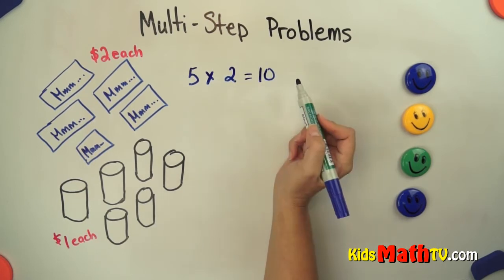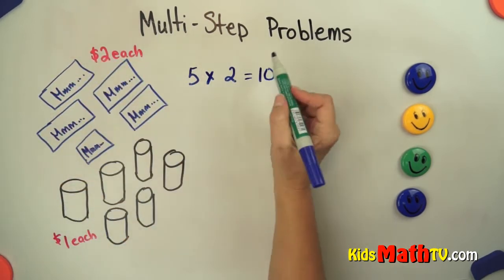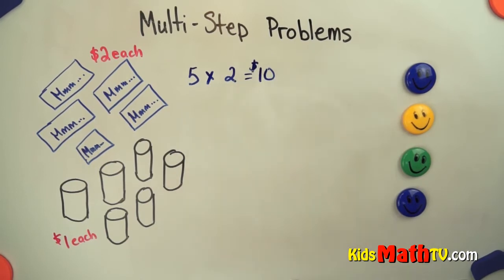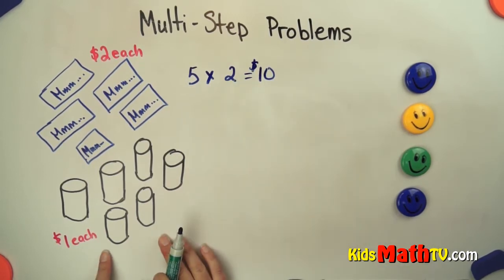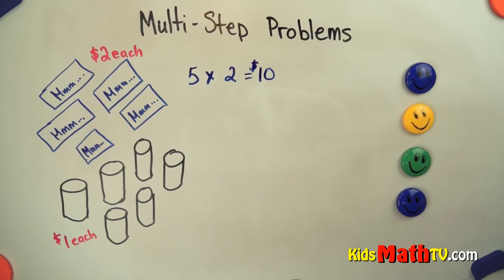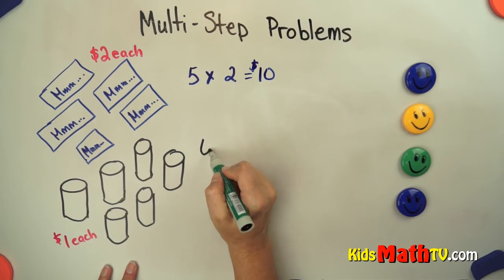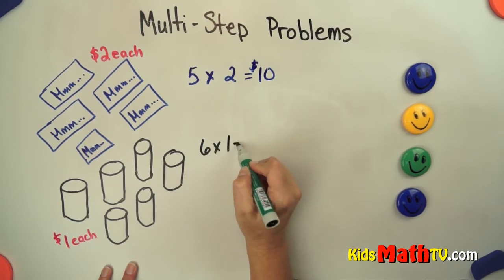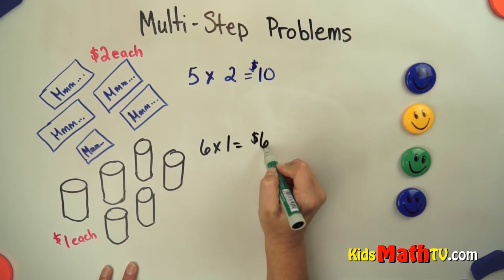Now if we do the sodas, there are six sodas, and each of those sodas costs $1. So we could do 6 times 1 is $6. So all the sodas together cost $6.